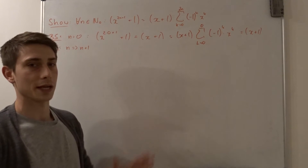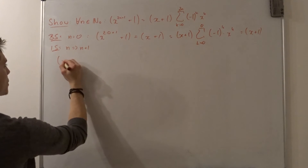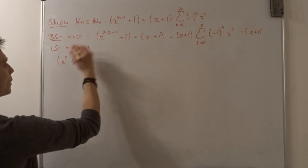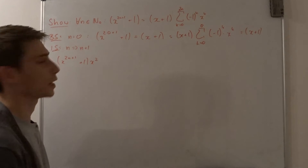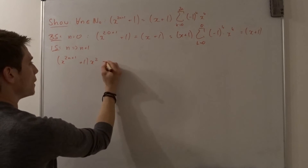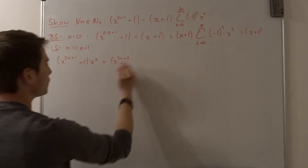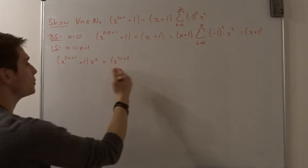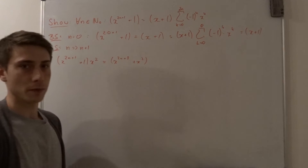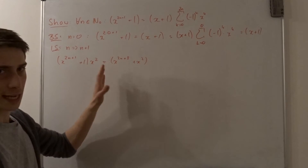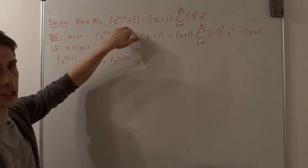How are we going to do this? We are going to use a little trick — we are going to play around with the algebra. We are going to multiply x squared on both sides. So we are going to start off by looking at x to the 2n plus 1 power plus 1, times x squared. We want to bring this expression into the regular form we want to show.